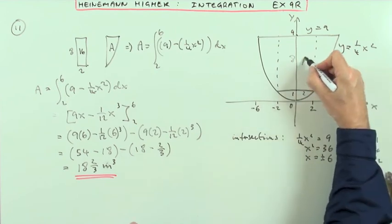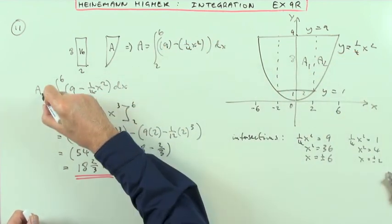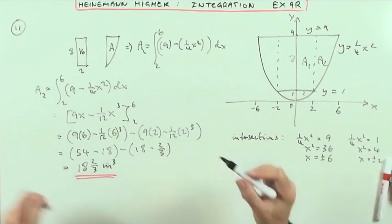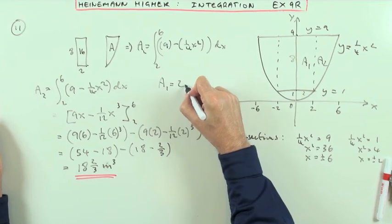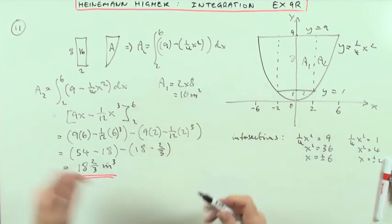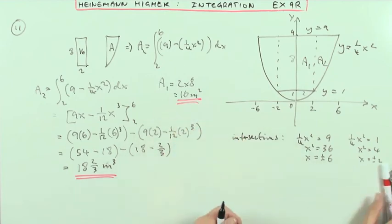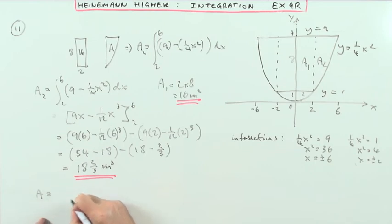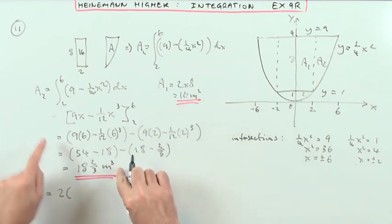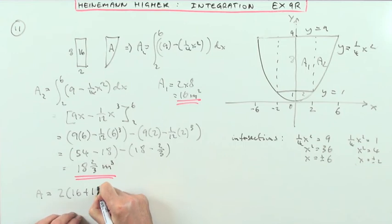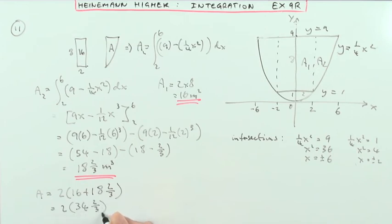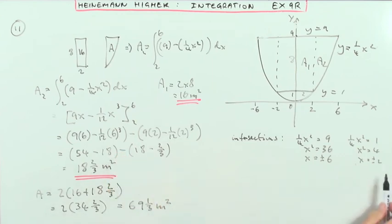So I'll call that Area 2 equals 18 and 2 thirds. Area 1 is just length times breadth — 2 times 8 which is 16 square metres. The total cross-sectional area is 2 lots of Area 1 and Area 2: 2 lots of 16 plus 18 and 2 thirds, which is 2 lots of 34 and 2 thirds. That gives 68 and 4 thirds, which is 69 and 1 third square metres.